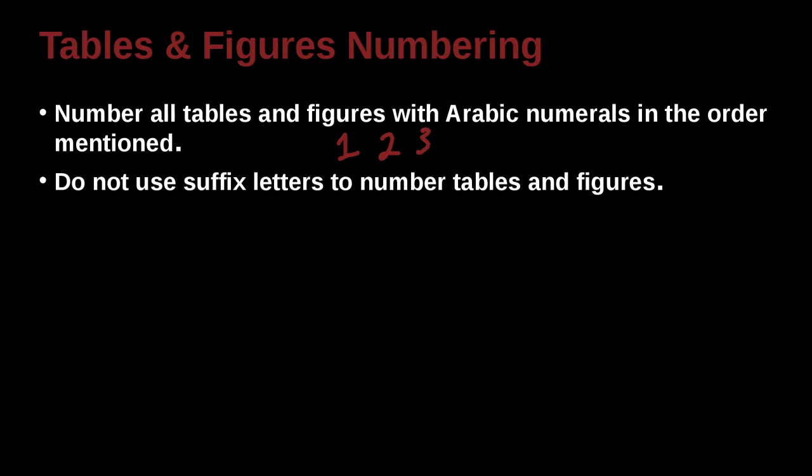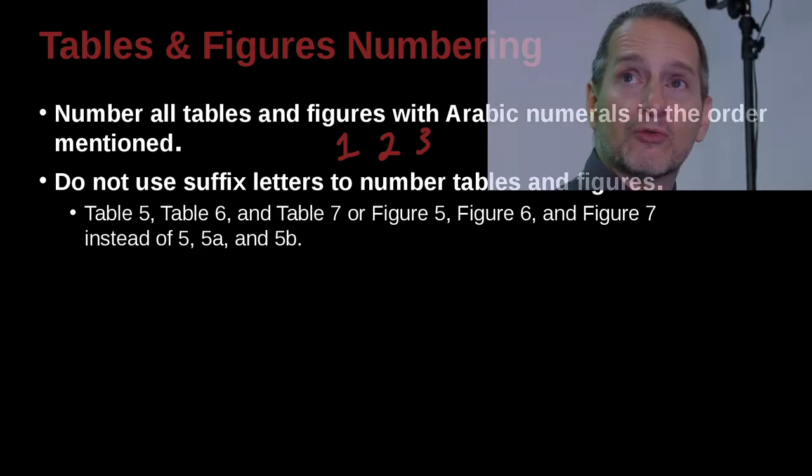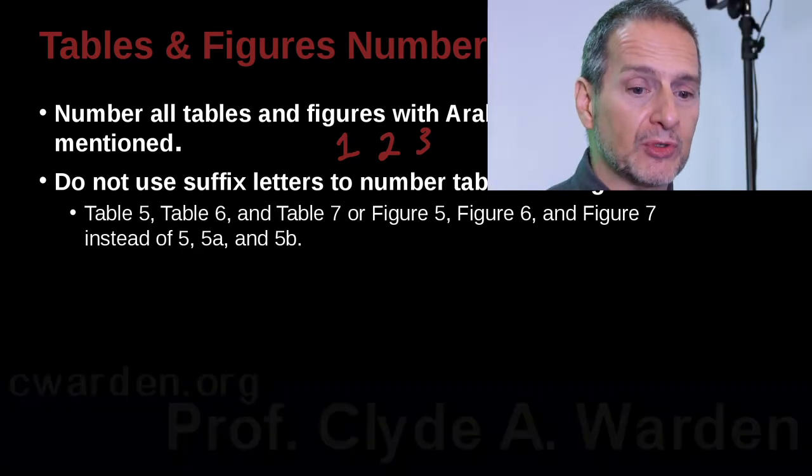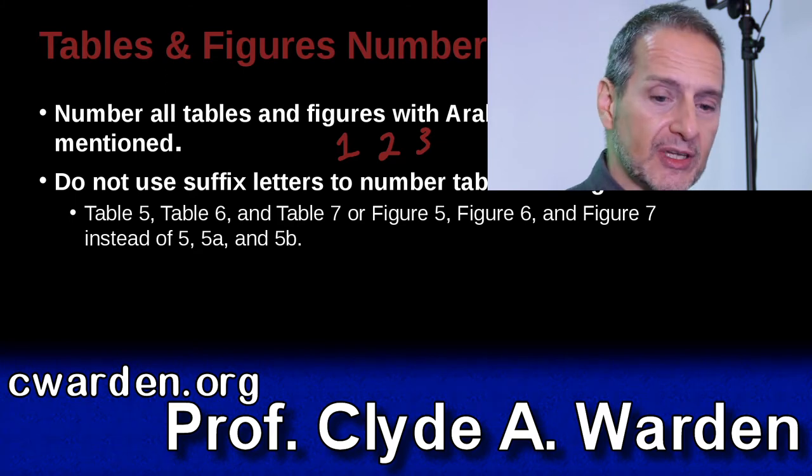When you refer to your tables or when you label them, you do not use a suffix. Instead you use the number to call them out. So for example you say see figure 1, see figure 2, see table 3. So you don't use fig, you don't use TAB. Instead you write them out as in here, the full Arabic number with the full English word. Table 5, table 6, table 7, figure 5, etc.